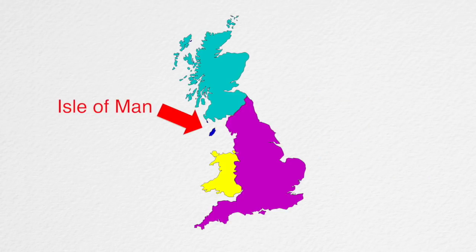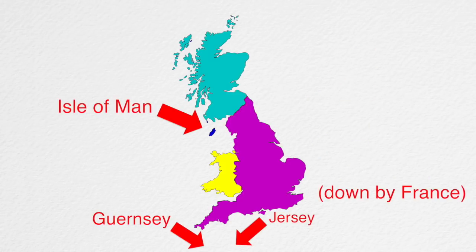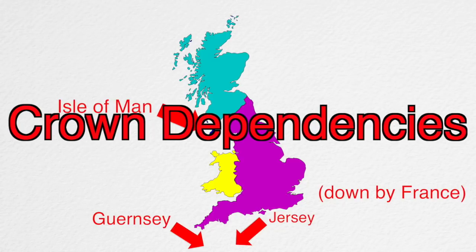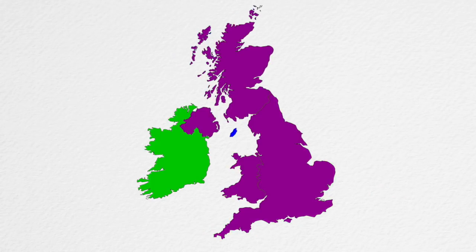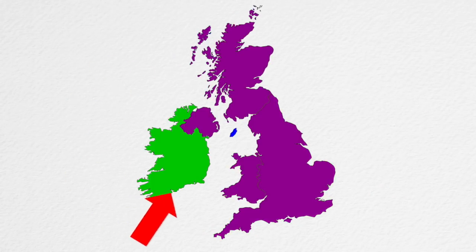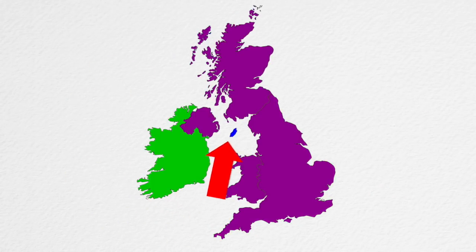Then there is the Isle of Man, Guernsey, and Jersey. These are called crown dependencies. These are a part of the British Isles, and like the Republic of Ireland, are independent from the UK. But unlike the Republic of Ireland, these are a part of the crown.